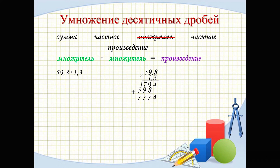Now we must count the digits after the decimal point in each decimal fraction. We have two digits total — the first and second sign. We count two places from the right and place the decimal point. The result is 77.74.